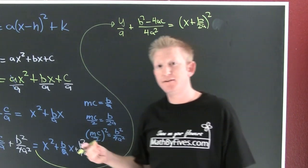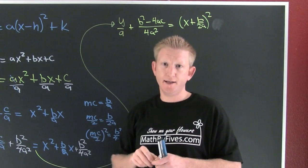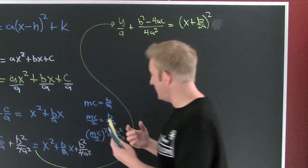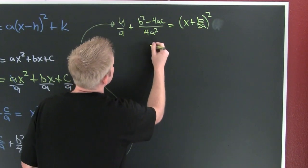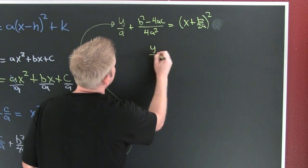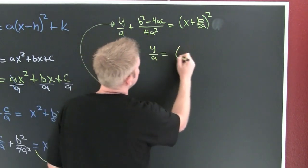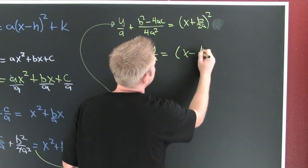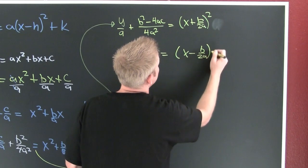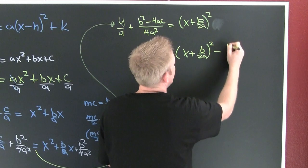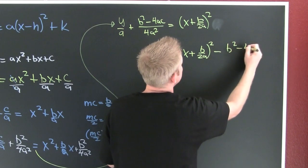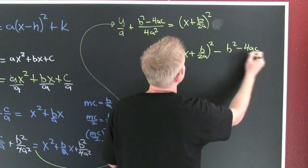And now my last step is different than completing the square. Instead of solving for x here I'm going to solve for y, I'm going to keep on keeping on. So then y over a is equal to...